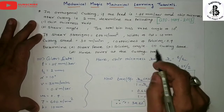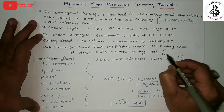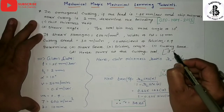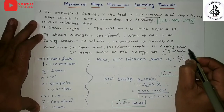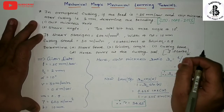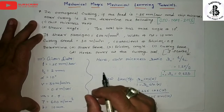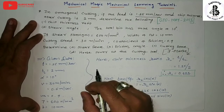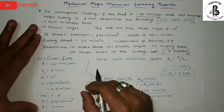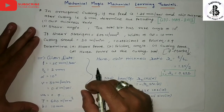Generally, this kind of problem is asked for seven-mark questions in different universities covering manufacturing process, metal cutting operations, and production technology.